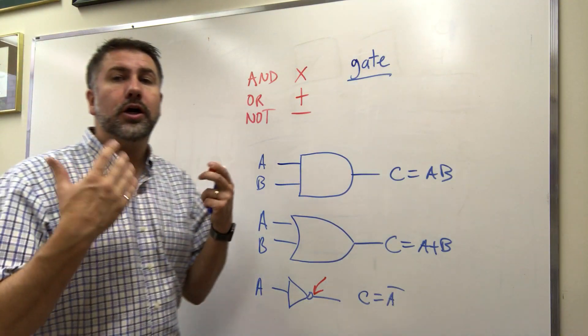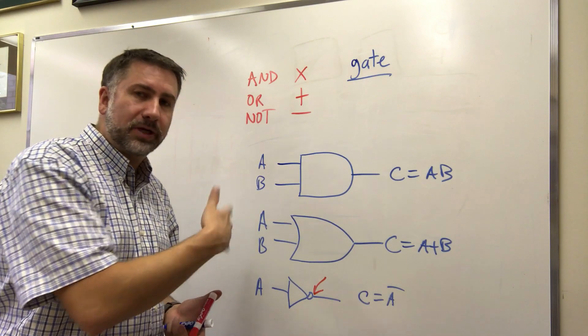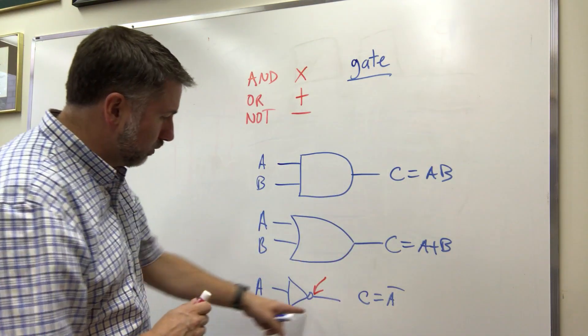That circle indicates that we are changing the logical value. If it's a 1 it becomes a 0. If it's a 0 it becomes a 1. So we're inverting the logical value with that dot.